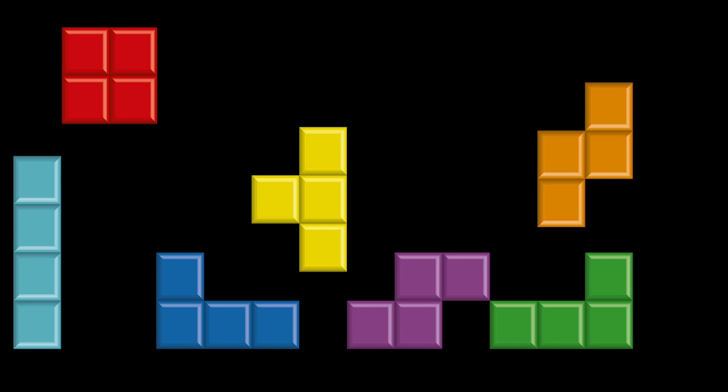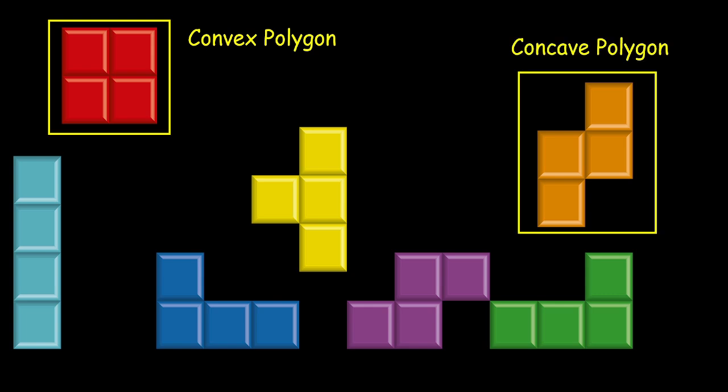So we are going to explore the fascinating world of polygons using this example. Now in the game of Tetris, there are a lot many blocks, some of which are convex, for example, this one and some of these are concave, for example, this one. Now the question is what makes a polygon convex and what makes a polygon concave? Let us look into it.